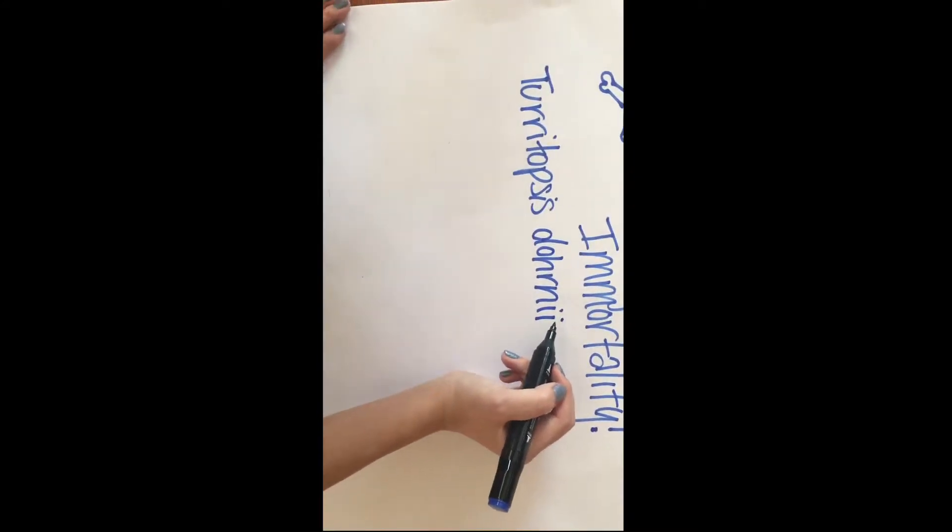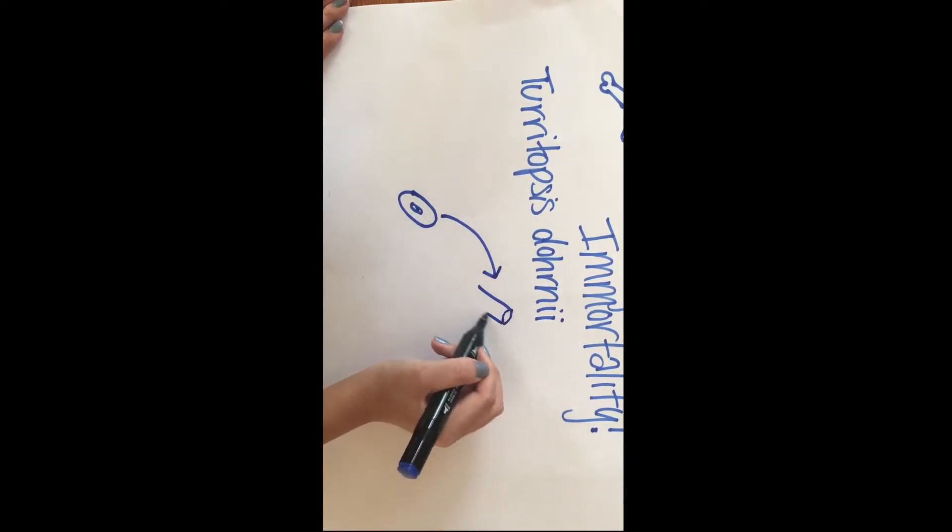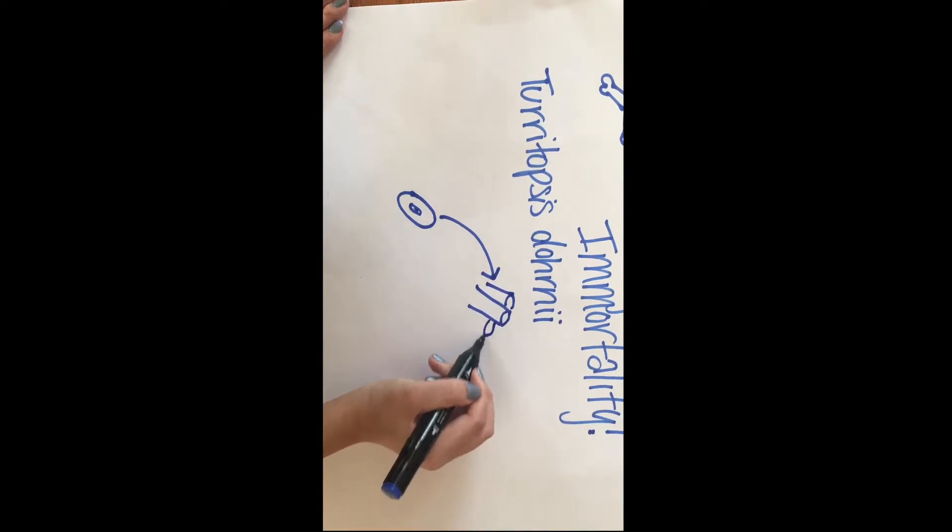Turritopsis dornii, or the immortal jellyfish, can be found in the Mediterranean Sea and near Japan. It's part of the class Hydrozoa, a group of tiny predatory animals that are often found in huge colonies.